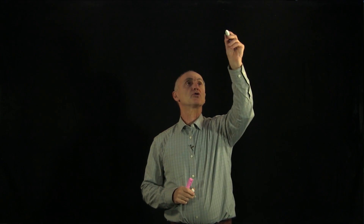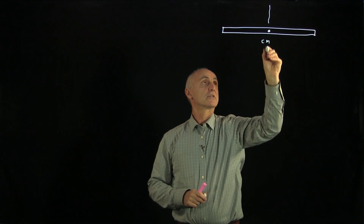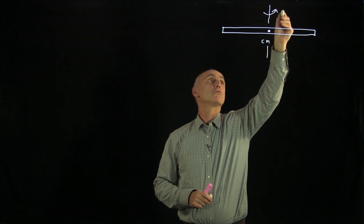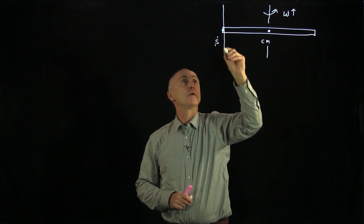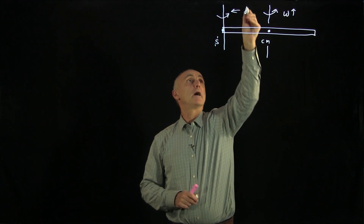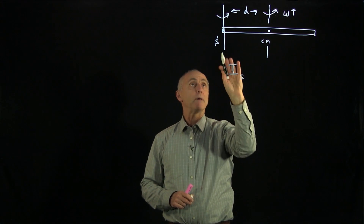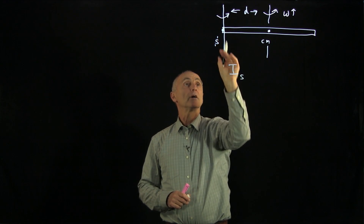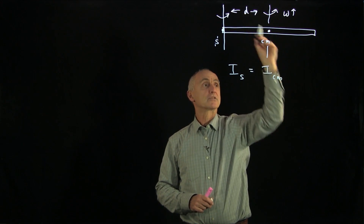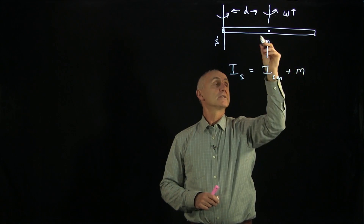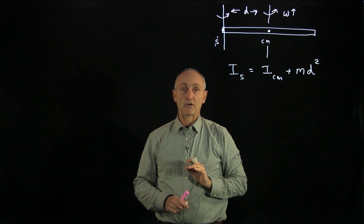First, we want to quote the theorem. Let's draw an example of our rigid body and take the center of mass. Consider an axis going perpendicular to the center of mass — we can think of the object as rotating about that axis. Now consider another axis passing through a different point, but also parallel to this axis, separated by a distance d. The key result is that the moment of inertia about an axis passing perpendicular to the plane of the object through axis s equals the moment of inertia about an axis through the center of mass plus the mass of the object times the distance between the two parallel axes squared.